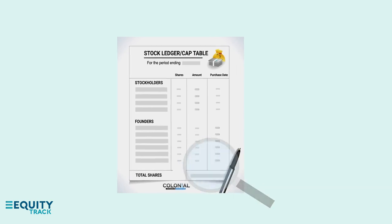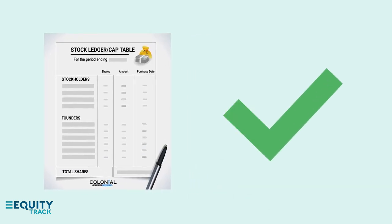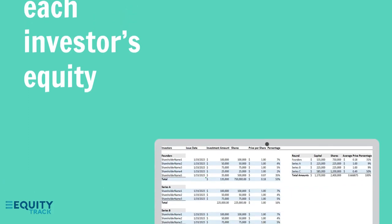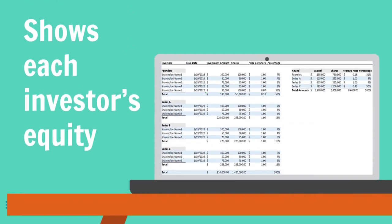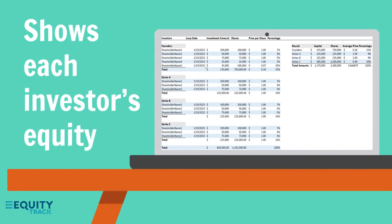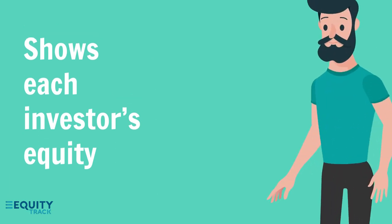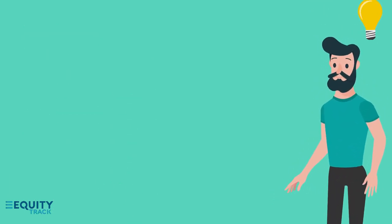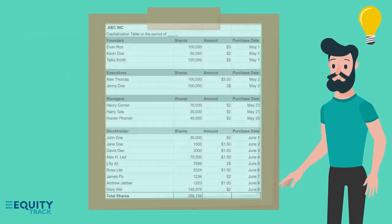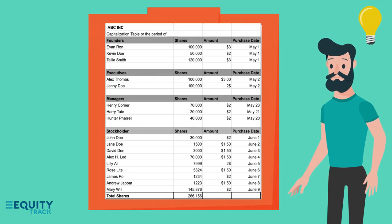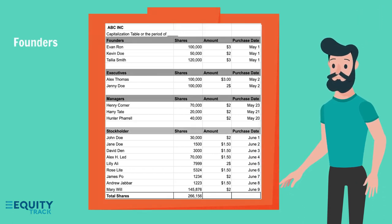You should use your Cap Table as a major factor in every significant financial decision that your company makes. To get the most out of your Cap Table, you must make sure it's accurate. Because your Cap Table should show a detailed breakdown of each individual investor's equity, you need to think carefully about how you list your investors. For example, you may want to list the founders at the top of the Cap Table, regardless of how much equity they have.